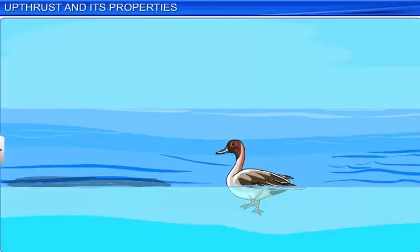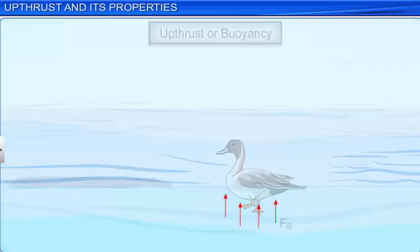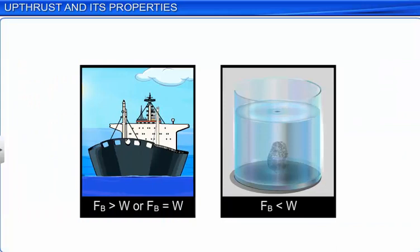All liquids and gases are known as fluids. A fluid exerts an upward force when an object is immersed in it partially or wholly. This property is called upthrust or buoyancy, and it is denoted by FB. Upthrust can be greater than, equal to, or less than the weight W of the body.